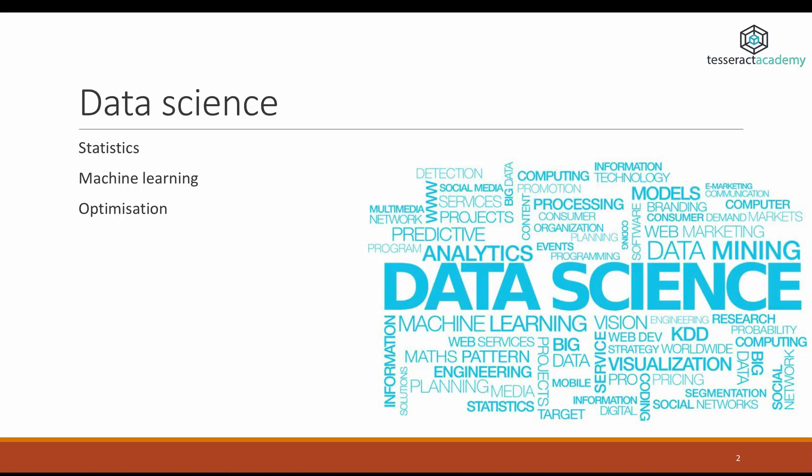Data science is an umbrella term that encapsulates many other disciplines. Primarily, it encapsulates statistics, machine learning, and AI. And I would also say that optimization is a very important part of data science.